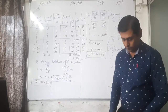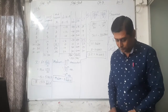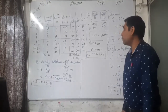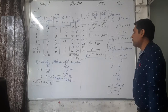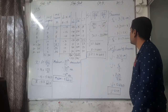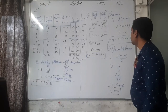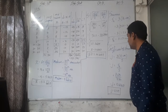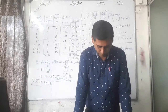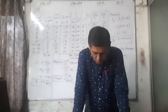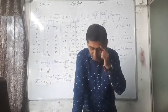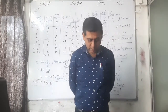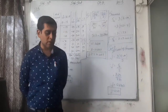Now illustration number seven. I am reading the question first. The frequency distribution of weekly wages paid to 600 workers is given below. Find the Carl Pearson coefficient of skewness from this distribution. Here continuous group data is given.